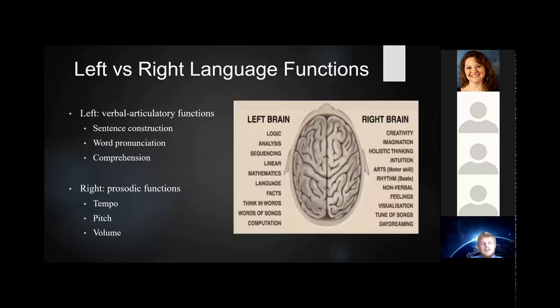The ability to produce and comprehend speech and language involves communication between the right and left hemispheres. The left hemisphere is responsible for verbal articulatory functions such as sentence construction and word pronunciation. In contrast, the right hemisphere is responsible for prosodic functions. Prosody is the melody of speech that involves changes in pitch, rhythm, and volume.